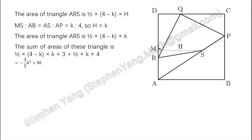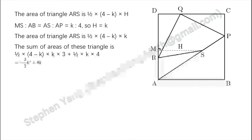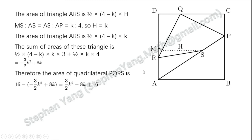The sum of these four triangles is one half times (4 minus K) times K times 3, plus one half times K times 4, which simplifies. So the area of quadrilateral PQRS equals 16 minus the sum of the four triangles, which equals three halves times K squared minus 8 times K plus 16.